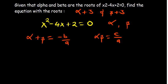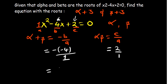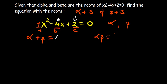Looking at this equation, the coefficient of x squared is 1, the coefficient of x is negative 4, and c is 2. Quickly determine the summation: alpha plus beta equals negative of negative 4 over 1, which is 4. Alpha multiplied by beta equals c over a, which is 2 over 1, equals 2. So we found the addition of alpha and beta is 4, and the product is 2.